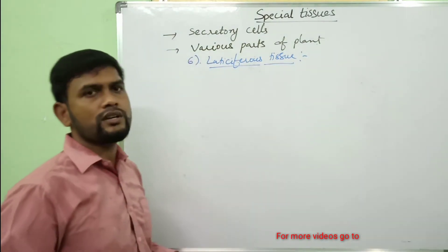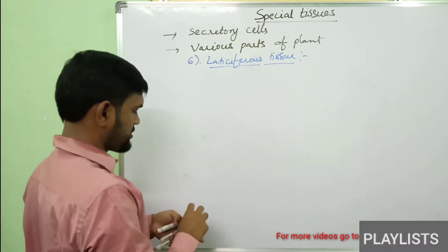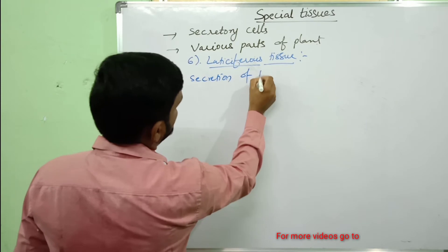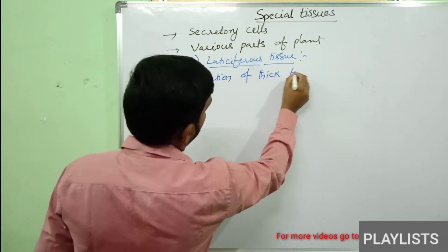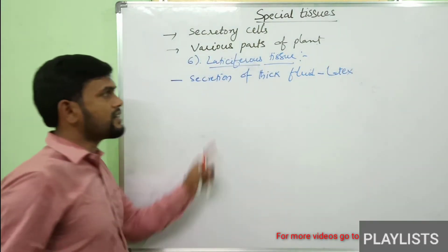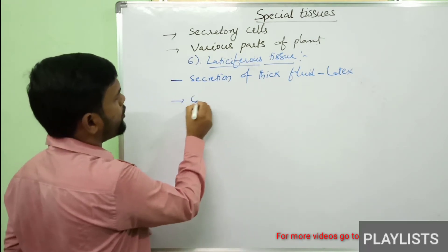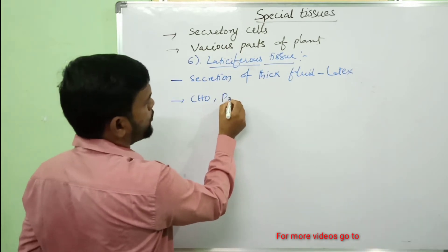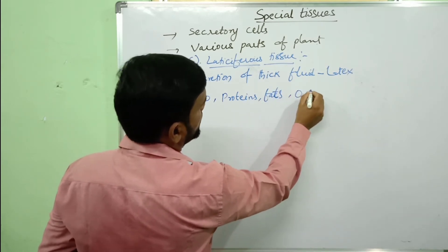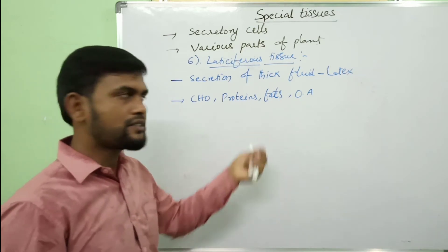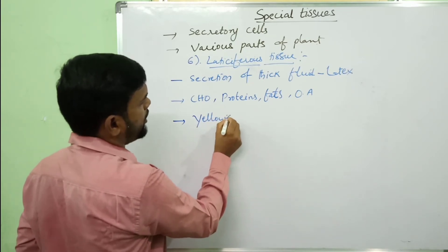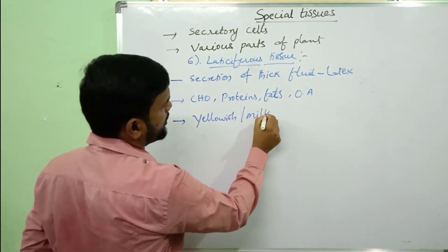Laticiferous tissue is concerned with the secretion of a thick fluid called latex. This latex is an emulsion containing carbohydrates, proteins, fats, organic acids, rubber, etc. This latex is generally yellowish, milky, or colorless.